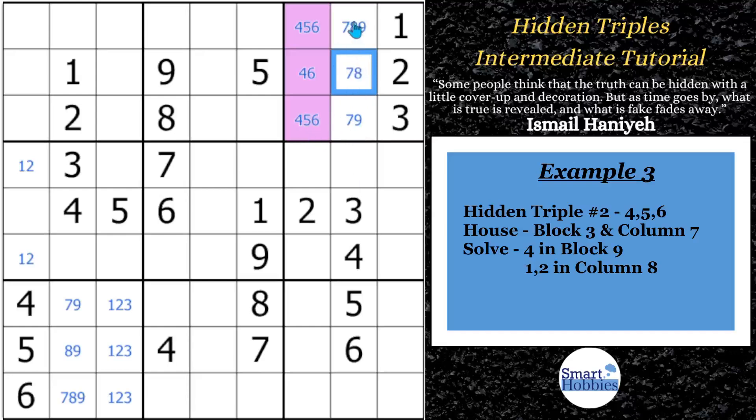One, it uses as a pointing triple another set of locked candidates that the 4 can't be anywhere else along column 7 except in these three cells. And you have this 4 right here, and you have these two 4s. The only place to put a 4 now in block 9 is right here. So we use this locked hidden triple as a pointing triple to allow us to solve for this 4.